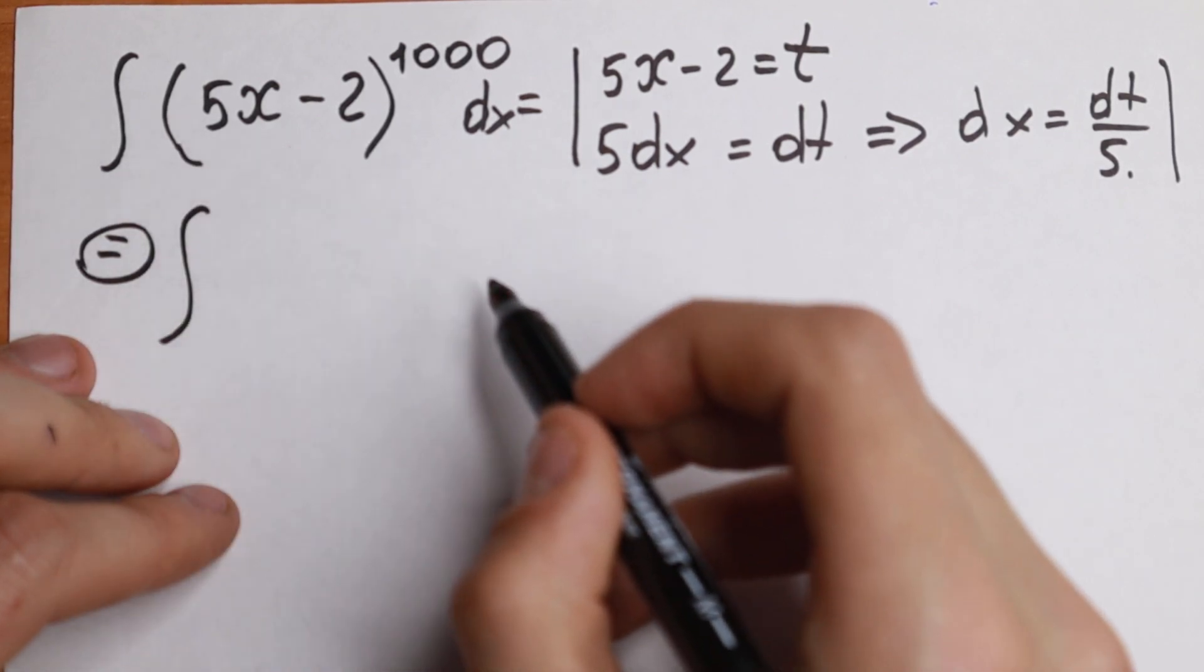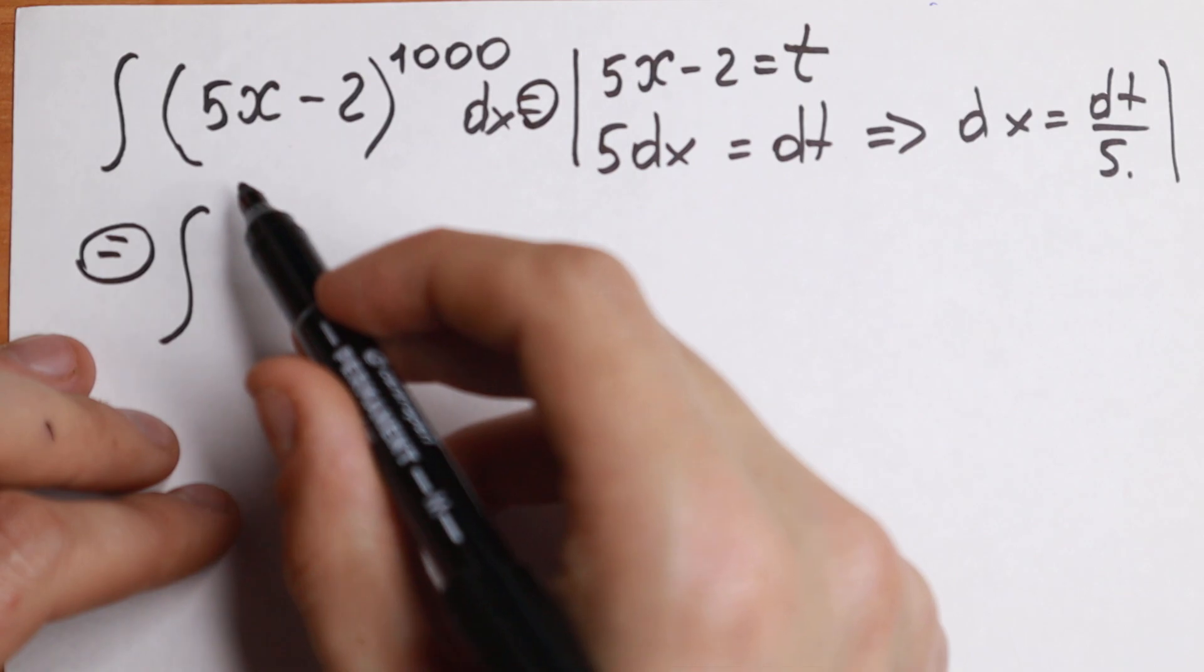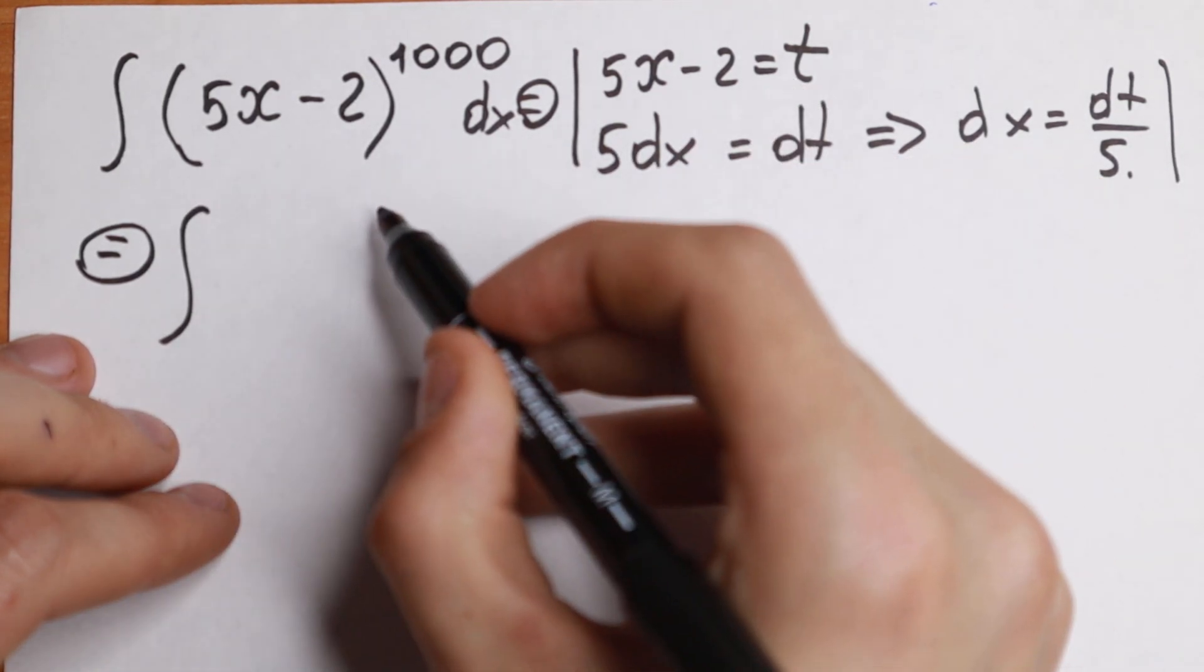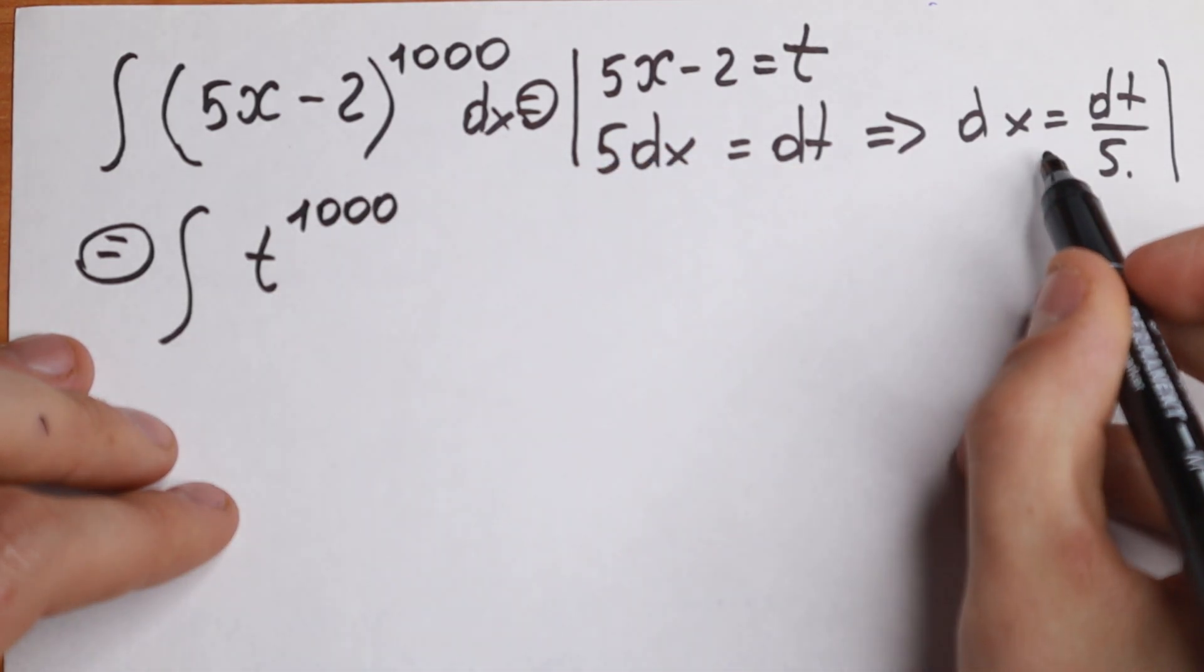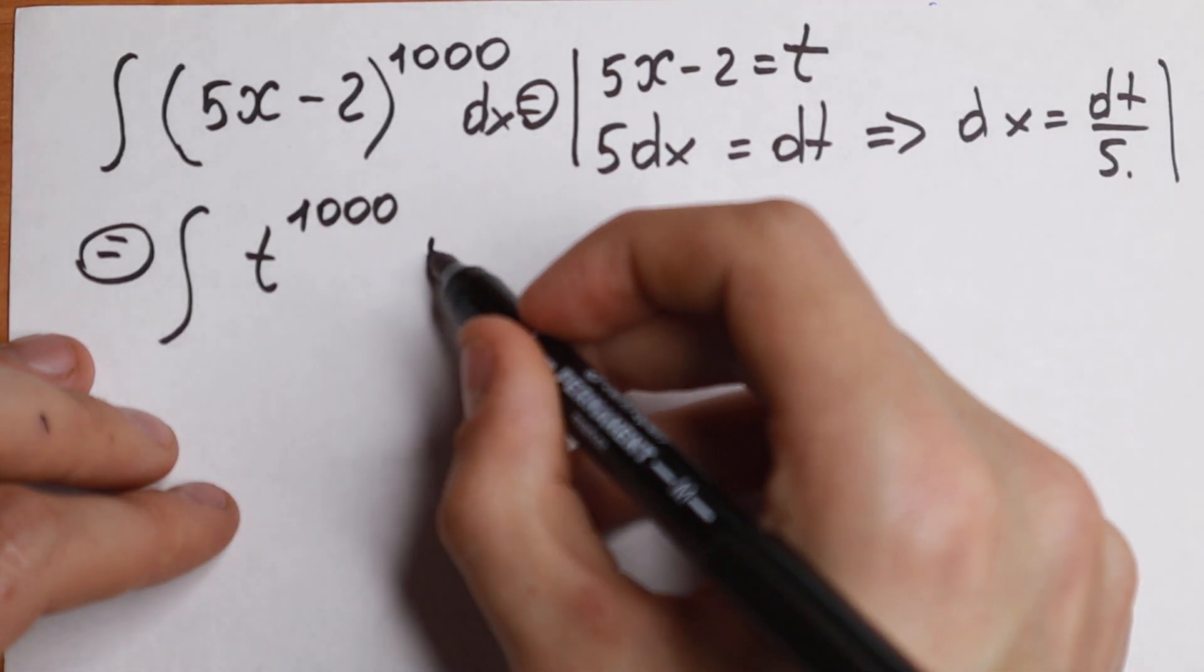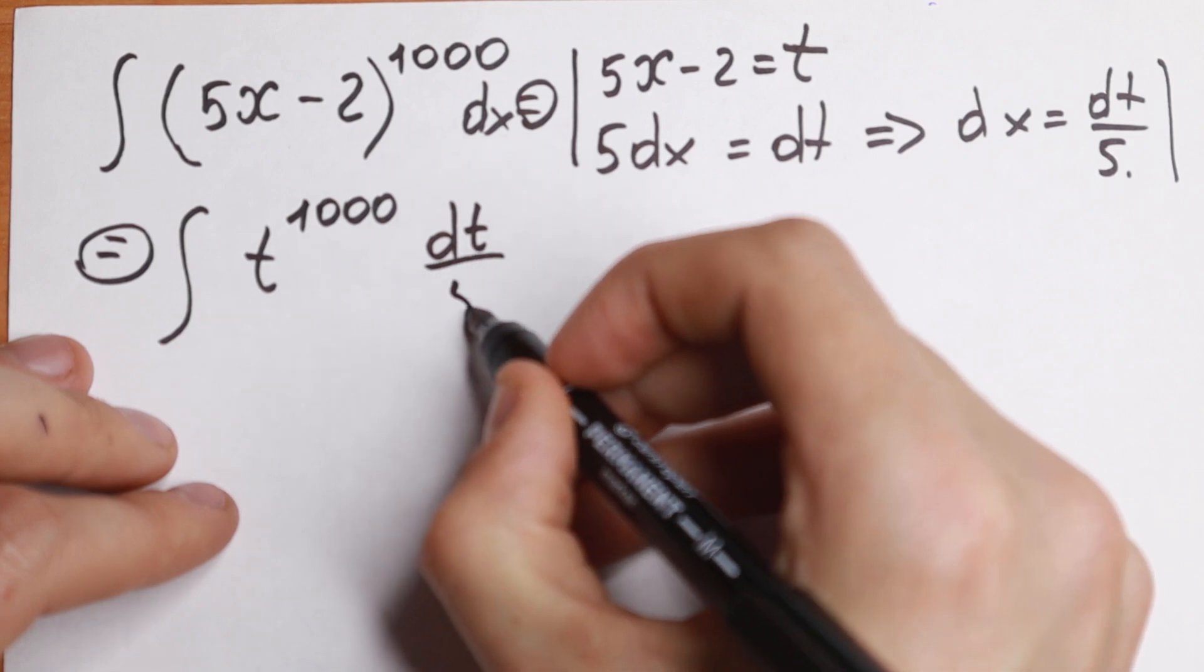We will have that integral, this one, will be equal to 5x minus 2 equal to t. So we will have t to the power 1000. And dx equal to dt over 5.